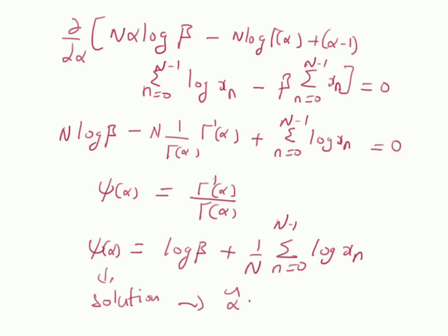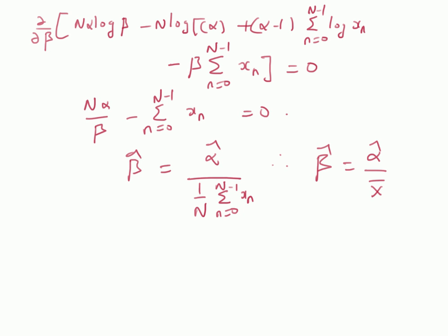Hence, the estimates of the parameters of the gamma probability density function are: (1) for alpha, solve the non-linear equation psi(alpha) = log(beta) + (1/N) * sum of log(x_n), where psi is the digamma function; and (2) once we have alpha-hat, compute beta-hat = alpha-hat / x-bar, where x-bar is the mean of the observations. In this video, we have looked at the maximum likelihood estimation approach for finding the parameters of a gamma distribution. Thanks for watching.